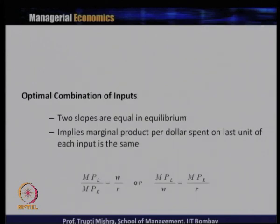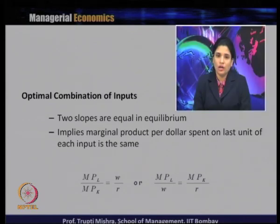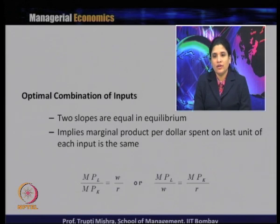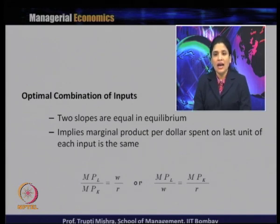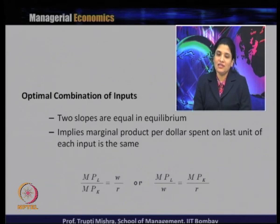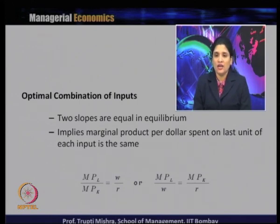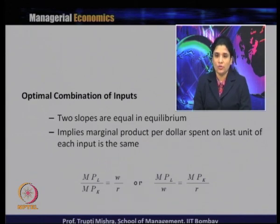The condition for the optimal combination of inputs is equilibrium between the slopes — the slope of the iso cost equals the slope of the isoquant — which implies the marginal product per dollar spent on the last unit of each input is equal. The slope of the isoquant is the ratio of MPL to MPK, and the slope of the iso cost is the ratio of input prices W and R. Simplifying: MPL/W = MPK/R. When this equality holds, we have the optimal input combination.